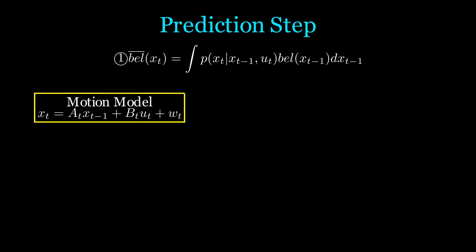In the prediction step, we need to use the motion model to compute P of Xt given Xt minus 1 and UT. Since we are given Xt minus 1 and UT, if we freeze this in our motion model, we see that the resulting probability distribution is simply the random variable Wt shifted up by a constant. Thus, the resulting distribution has the same covariance as Wt, but now has a mean of AT times Xt minus 1 plus BT times UT.